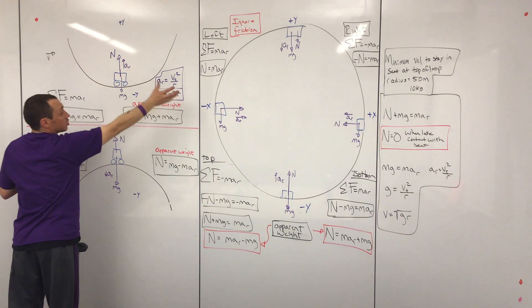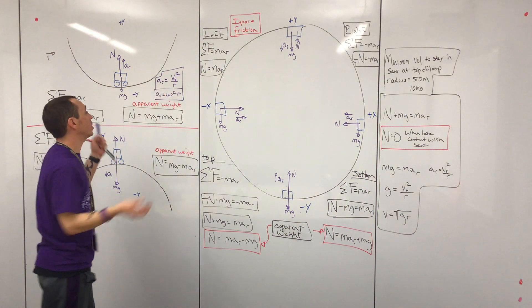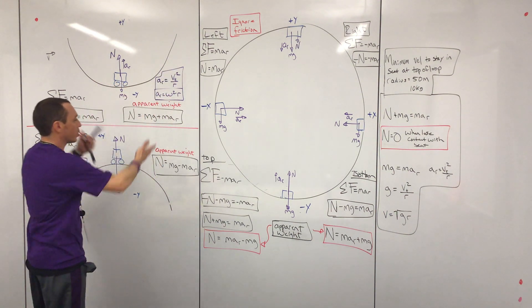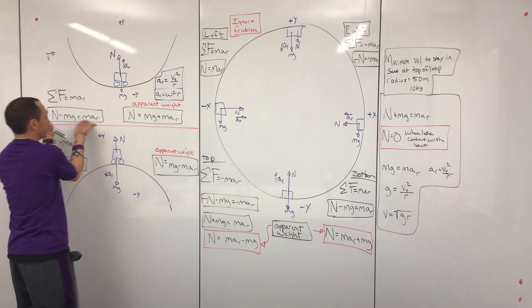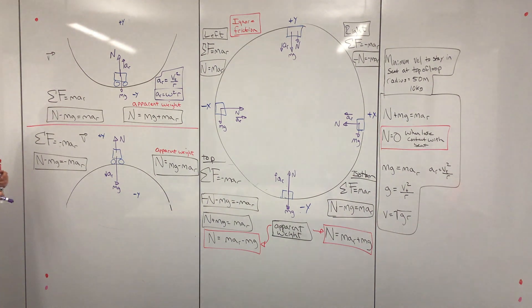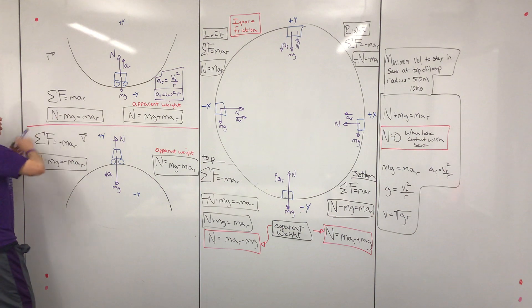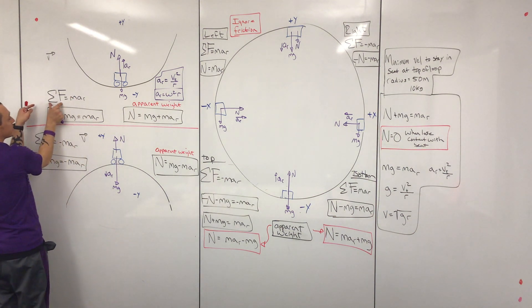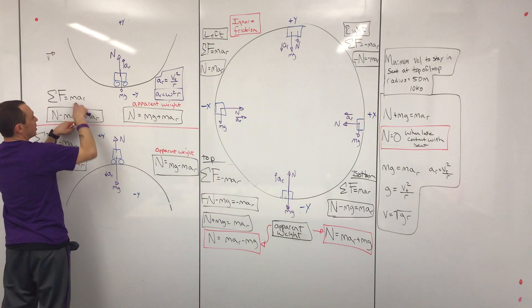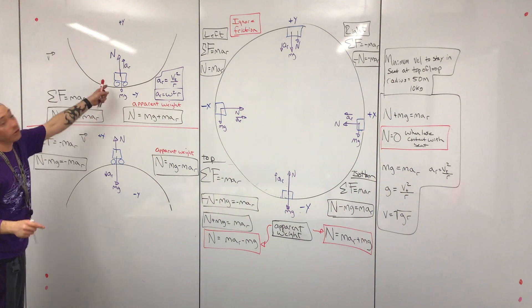We're not using a substitution for AR right now because we're not asked a question about it. Here we're not asked for those values, there's no reason to start converting them. We're just asked for the equation for this situation and the apparent weight. So we solve: first we write our equation, then fill in from our free body diagram. Normal force is positive, mg is negative, and radial acceleration is also positive.